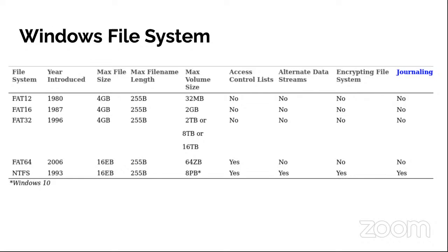Windows supports five file systems: FAT12, FAT16, FAT32, FAT64, and NTFS. FAT — the File Allocation Table — uses a table to store information about where files are stored, the file space available, and where files cannot be stored. The New Technology File System, or NTFS, has replaced FAT.